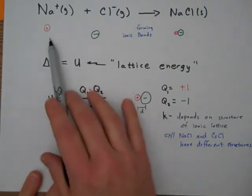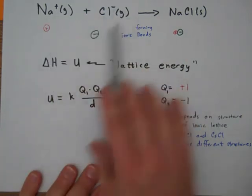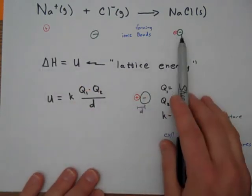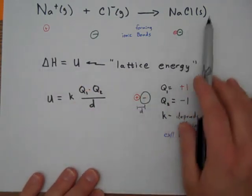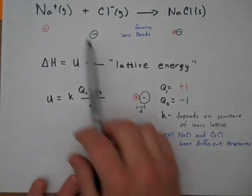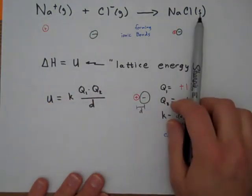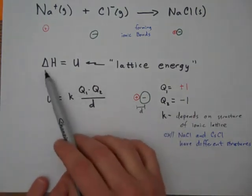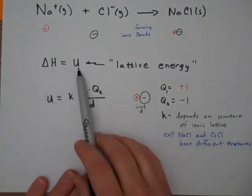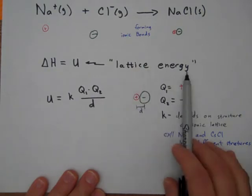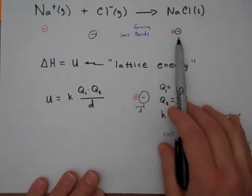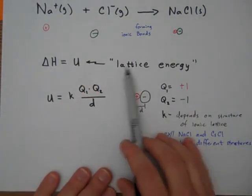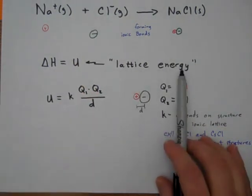We've got sodium cations and chloride anions in the gas phase. We mix them together—plus likes minus—they stick together, form an ionic bond, and we've made the solid. The amount of energy released, that enthalpy change, is what we call lattice energy. A lattice is the way ions are stacked together to make the solid.